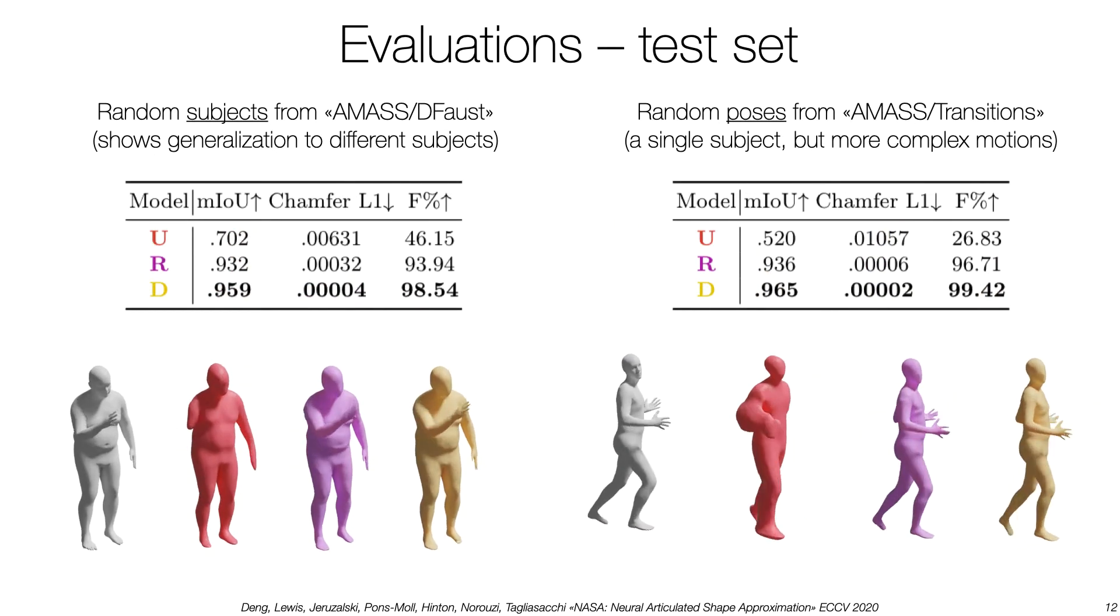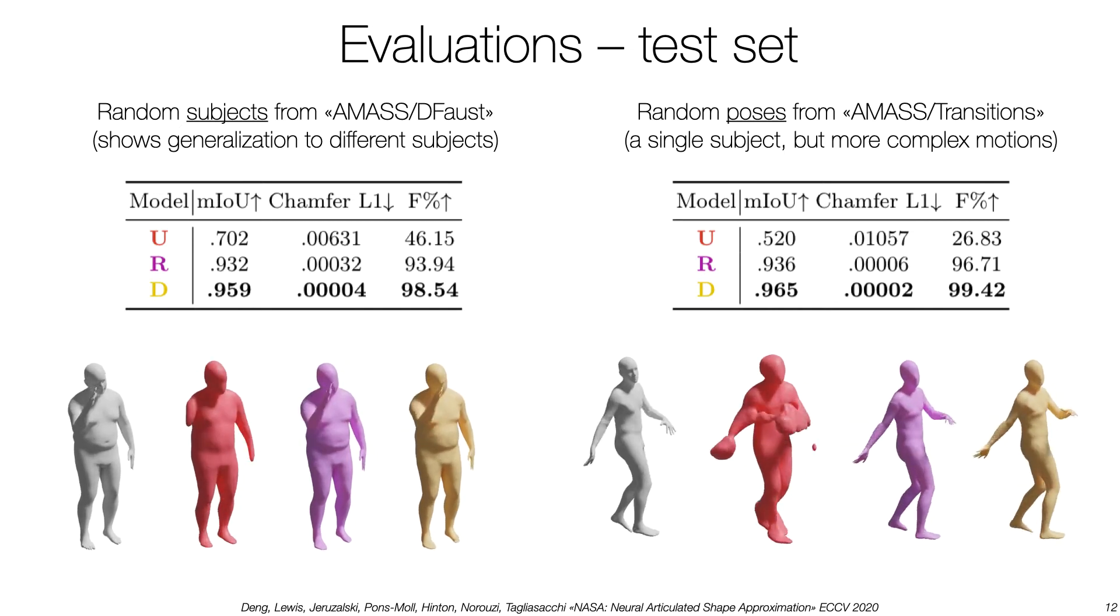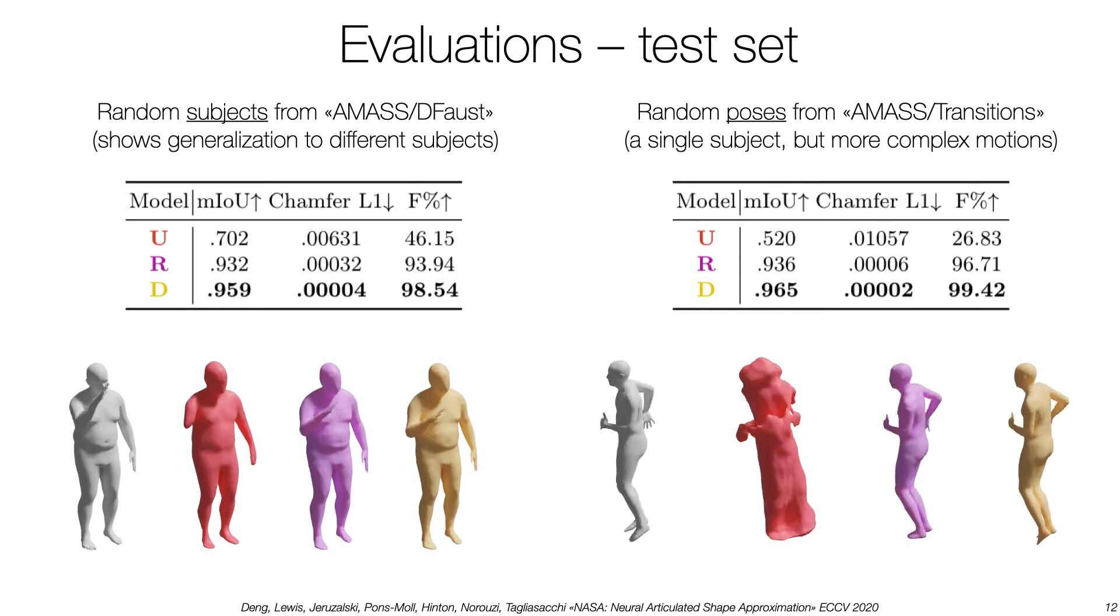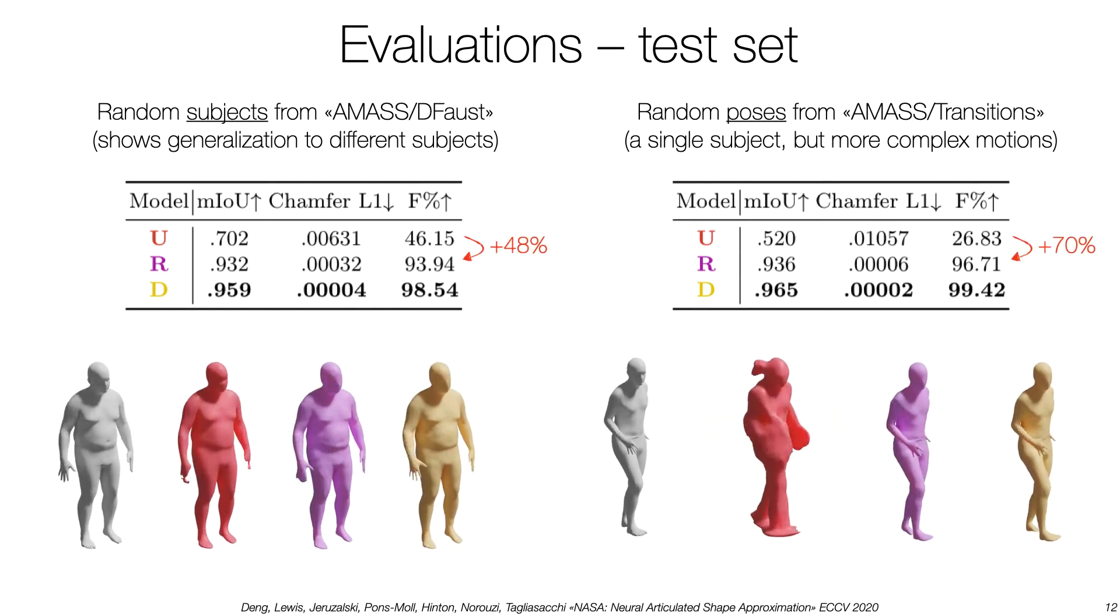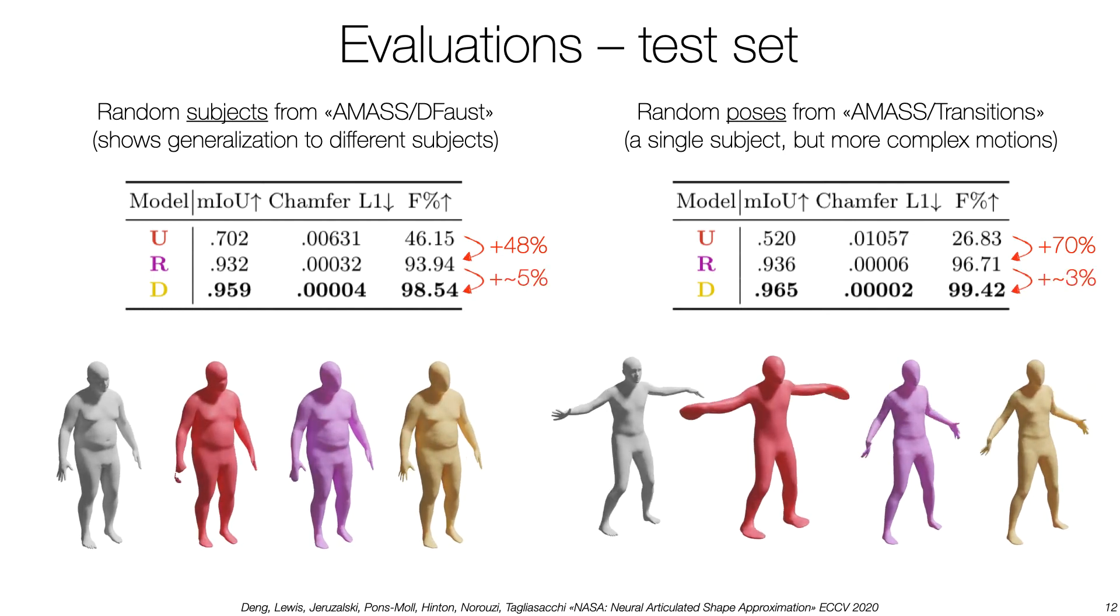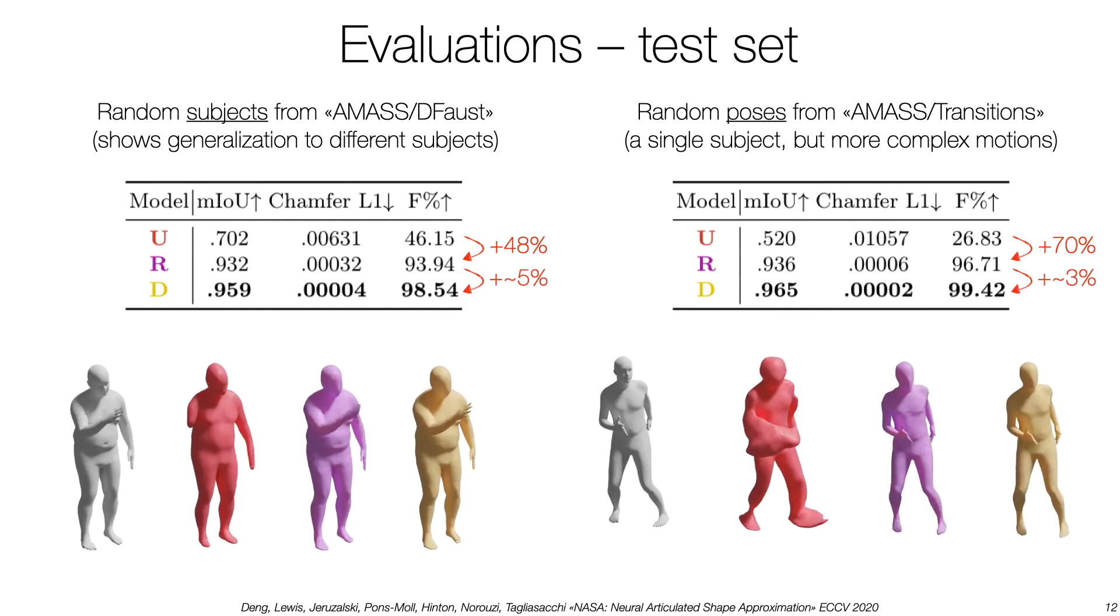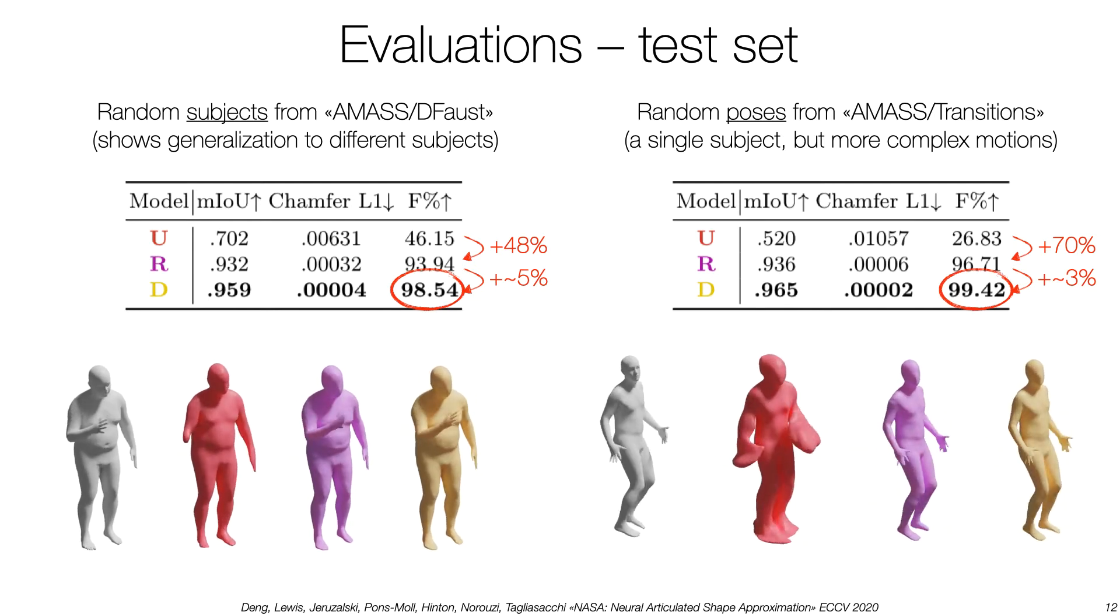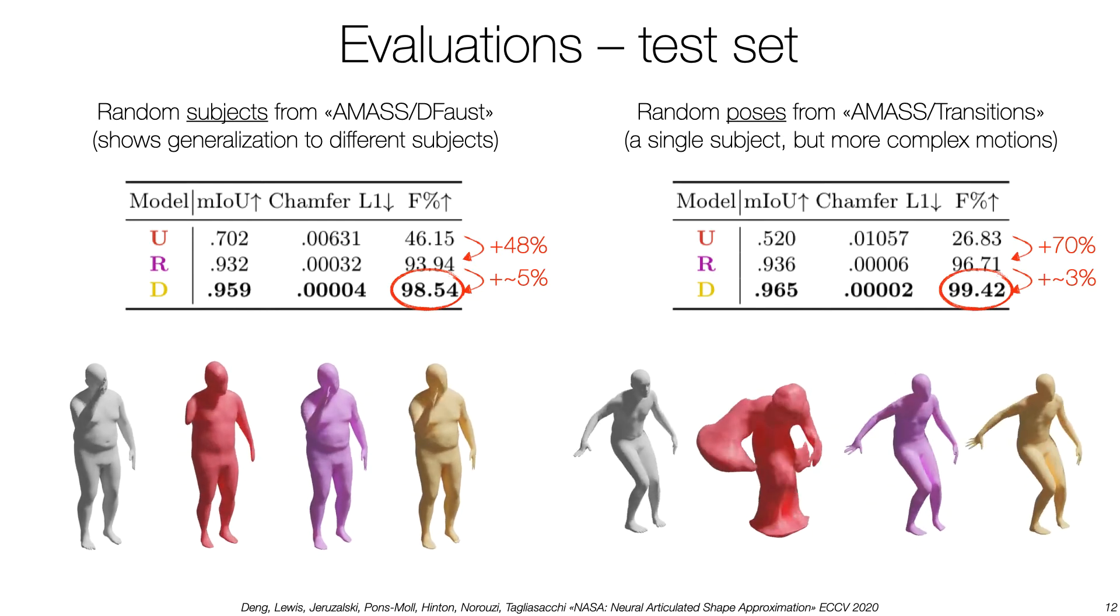We now qualitatively and quantitatively visualize the performances on unseen motions. The rigid model already provides a staggering 70% improvement in F-score performance, while the seemingly small 3% boost of the deformable model can be noticed in the animations. Overall, with 99% in F-score, NASA is close to matching the representation quality of traditional computer graphics.